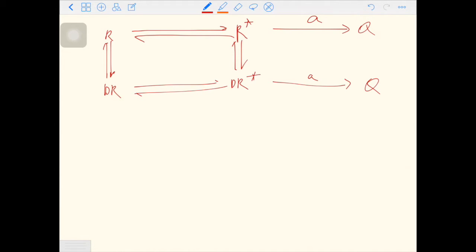So we have a square now. There are four reactions going on. We have to define the rate constant between R and DR.